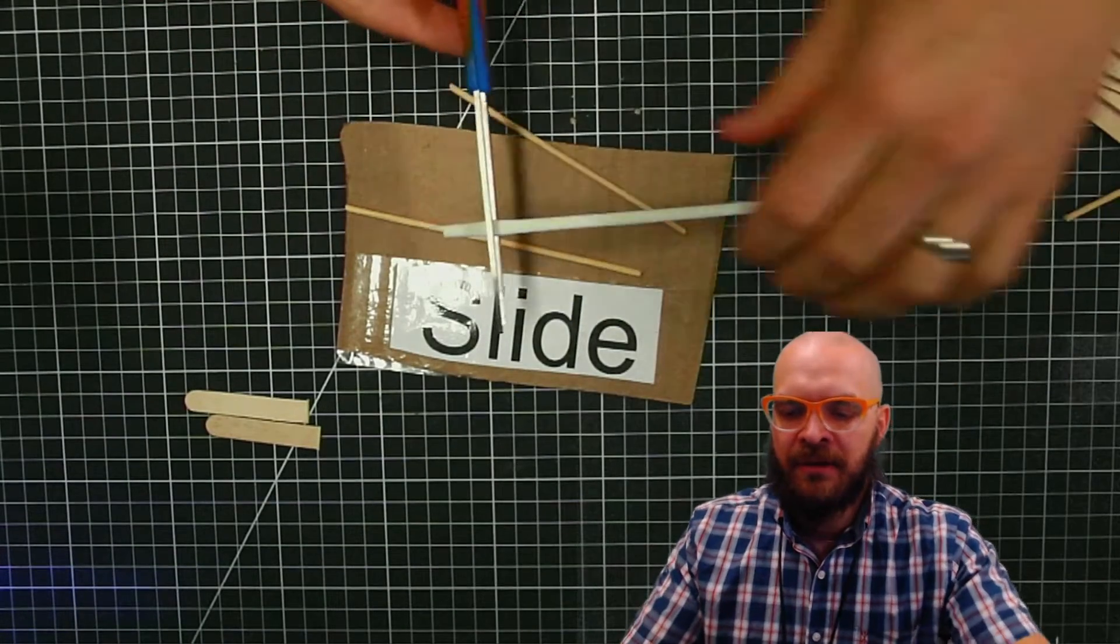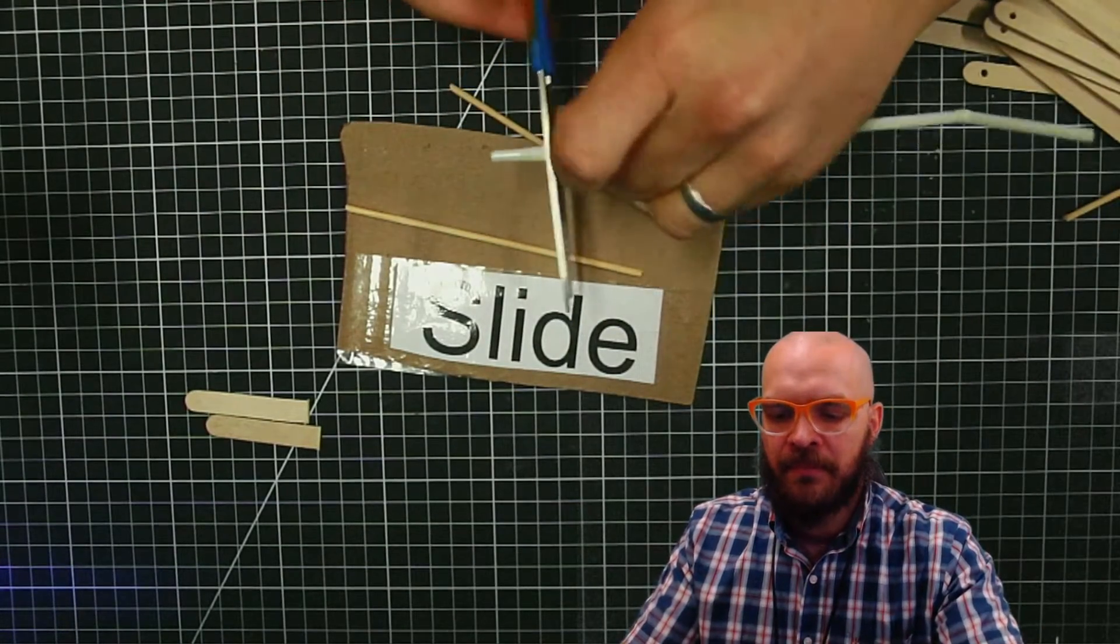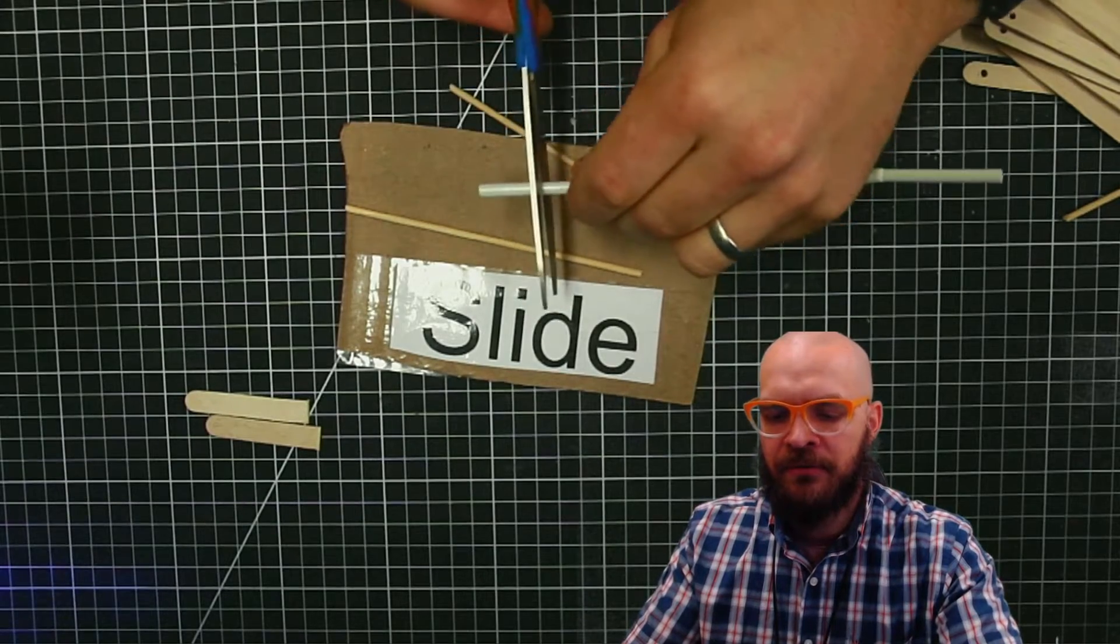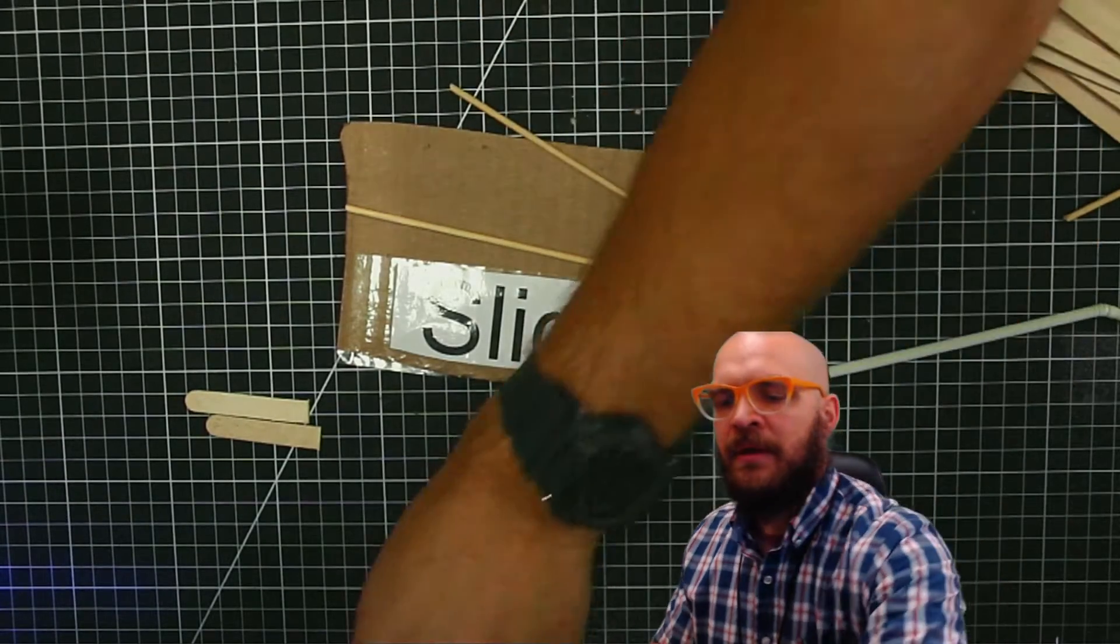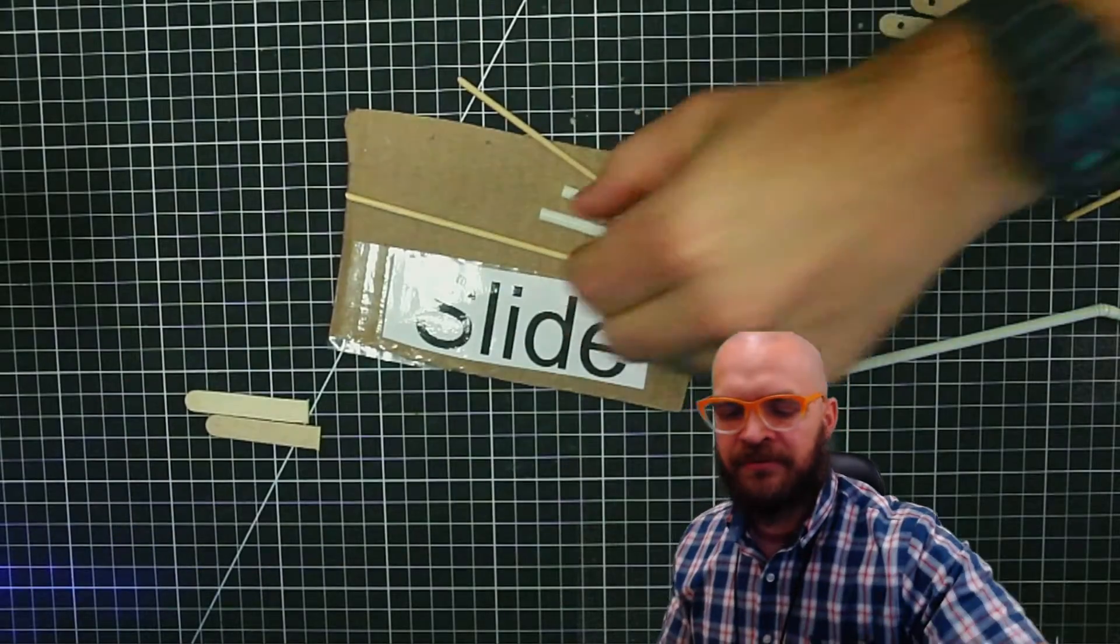We also need a little bit of straw, two of those, and our popsicle sticks.